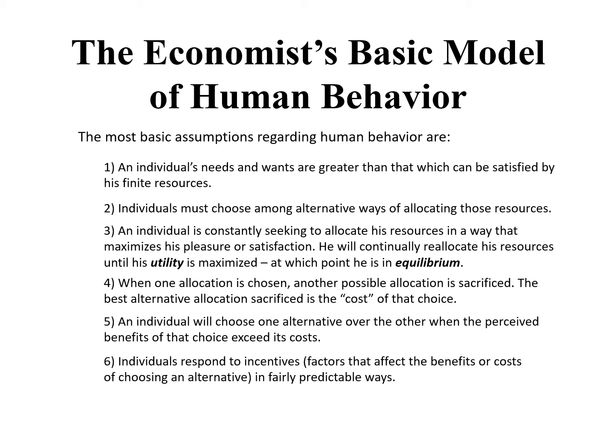Our sixth assumption about human behavior is that individuals respond to incentives in fairly predictable ways. If the cost of doing something goes up, you'll probably be less likely to do it. If the benefits of something goes up, you'll probably do more of it. Economists are fond of saying: when you tax something, you get less of it; when you subsidize something, you get more of it.